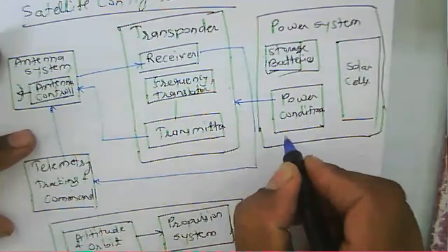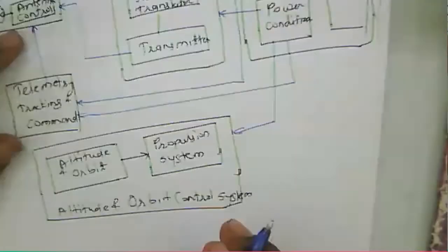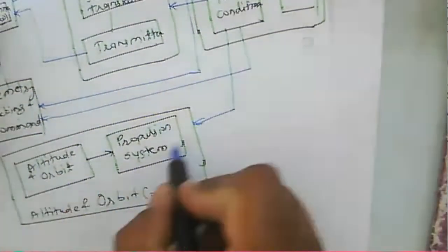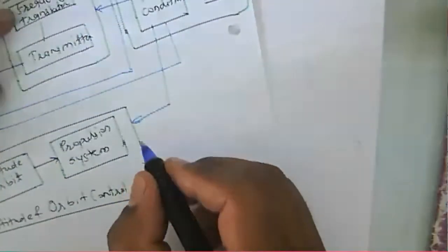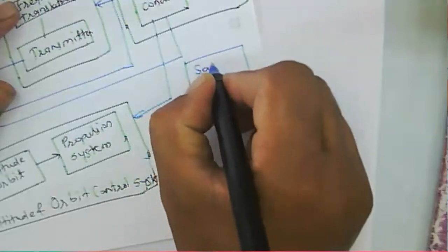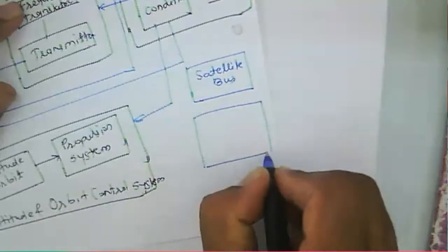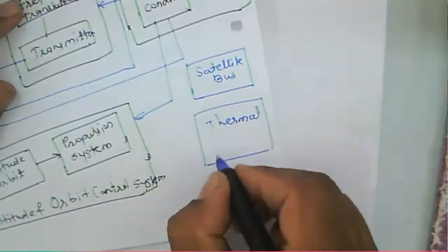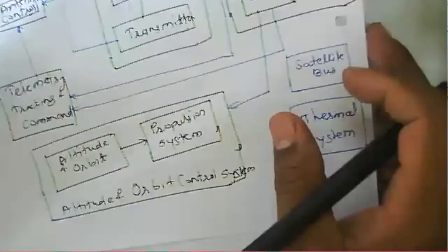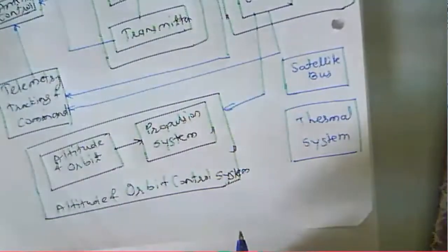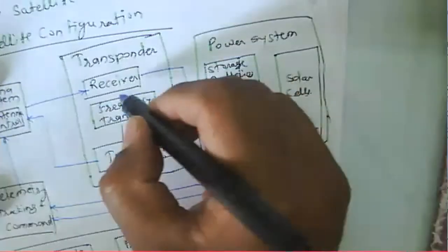We require a power supply to all these components so they can communicate and function. Along with that, we require a satellite bus and a thermal system. These form the satellite configuration used in the satellite. For a given transponder, we have a receiver, a frequency translator, and a transmitter — all these components work in different bands.